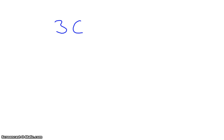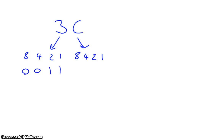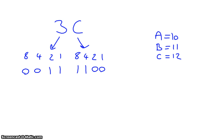If we want to convert this into a decimal value, a denary value, a base 10, then the first thing we do is split this into two sections. Each of these is 4 bits. Now the number 3 is 0011, which gives us 3. C we need to calculate — A is 10, B is 11, C is 12. If in doubt, always write them down. 8 plus 4 is 12. So that has converted hex to binary.